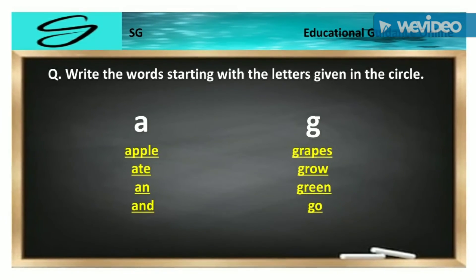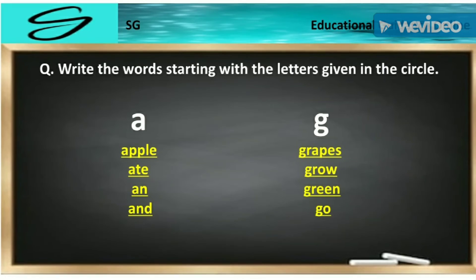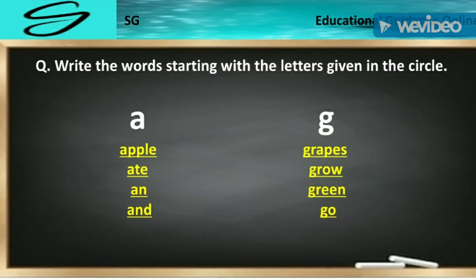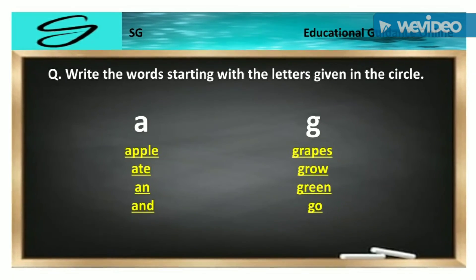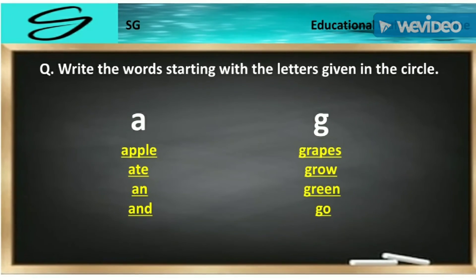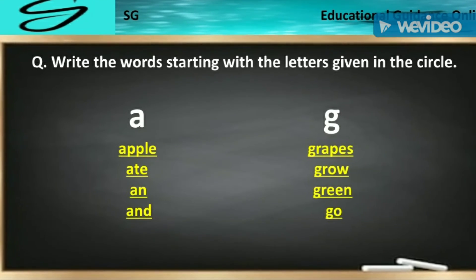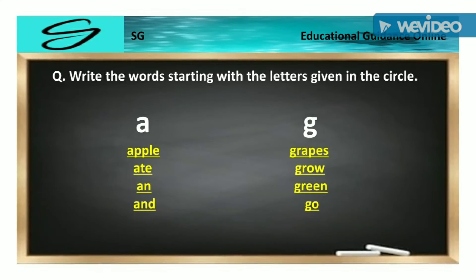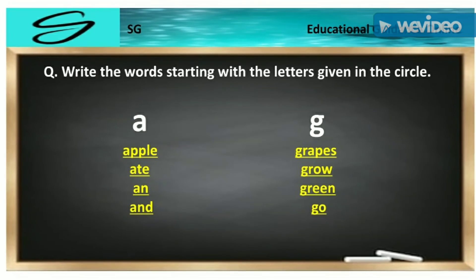Question: Write a word starting with the letters given in the circle. A for apple, eat. G for grapes, grow green.